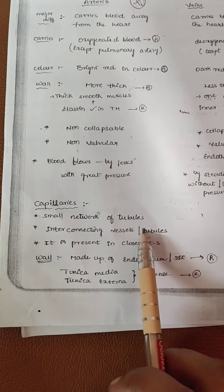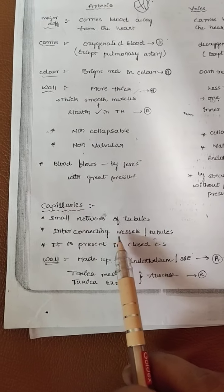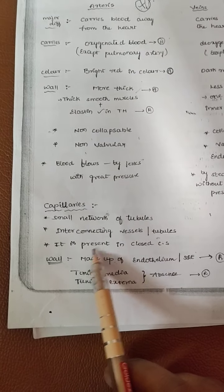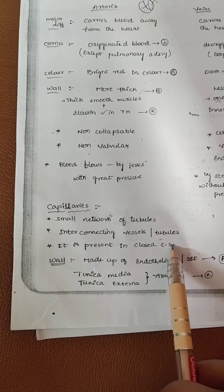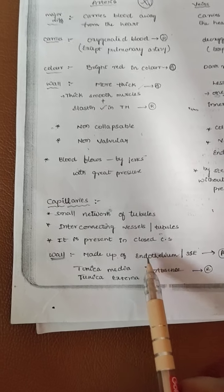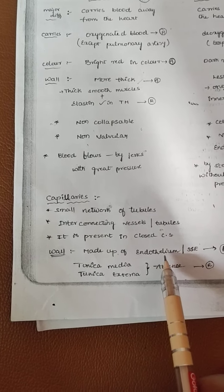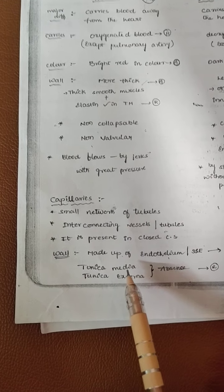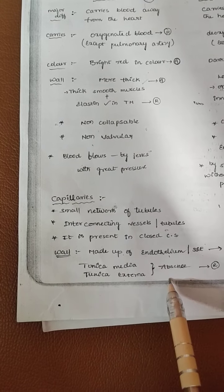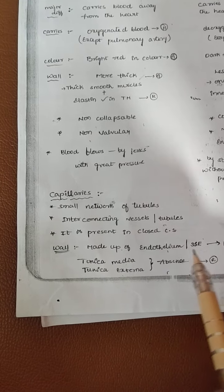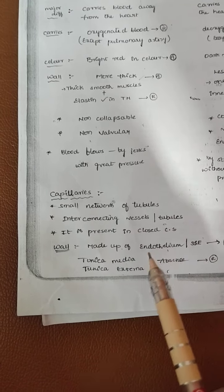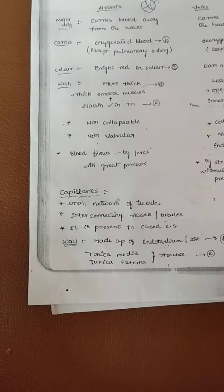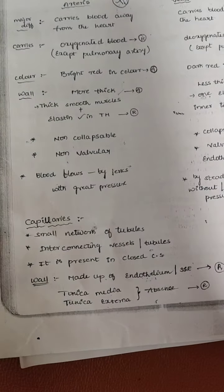Capillaries are small networks of tubules, interconnecting between the vessels and tubules, and are present in the closed circulatory system. They are made up of endothelial cells. For capillaries, the tunica media and tunica externa are absent; they only have tunica interna with endothelial cells.